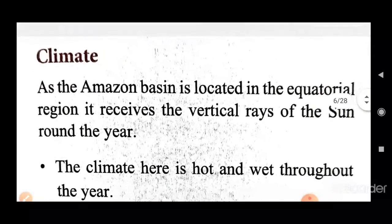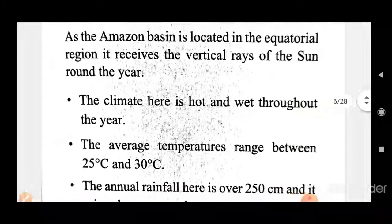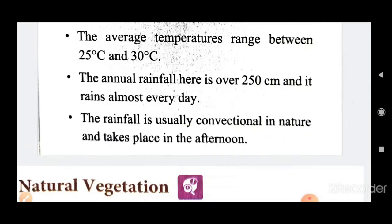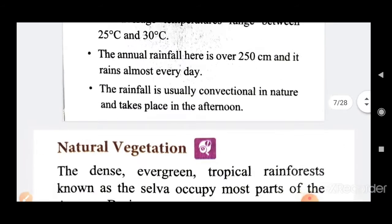As the Amazon Basin is located in the equatorial region, it receives the vertical rays of the sun throughout the year. The climate is hot and wet throughout the year. The average temperature ranges between 25 to 30 degrees centigrade. The annual rainfall here is over 250 centimeters and it rains almost every day. The rainfall is usually convectional in nature and takes place in the afternoon.